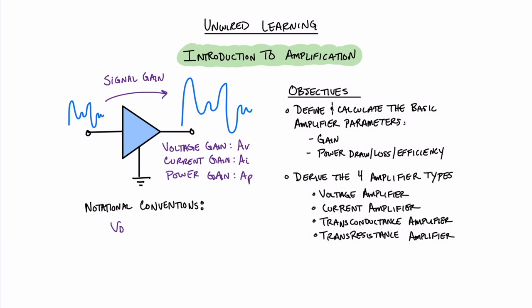The DC value we would denote as capital V, capital subscript D. And the time-varying AC component we would denote with lowercase letters — lowercase V, lowercase subscript D. To review: lowercase V capital D is the mixed signal, capital V capital subscript D is the DC offset, and lowercase V lowercase subscript D is the AC component.